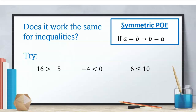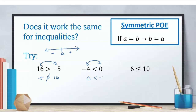Let's try this property on inequalities and see if it works. If we swap the two sides of an inequality, we get negative 5 greater than 16 — is that true? Negative numbers are always smaller than positive numbers, so that couldn't possibly be true. Let's try another: swapping negative 4 and 0 gives us 0 less than negative 4. But 0 is greater than any negative number, so that's false too.